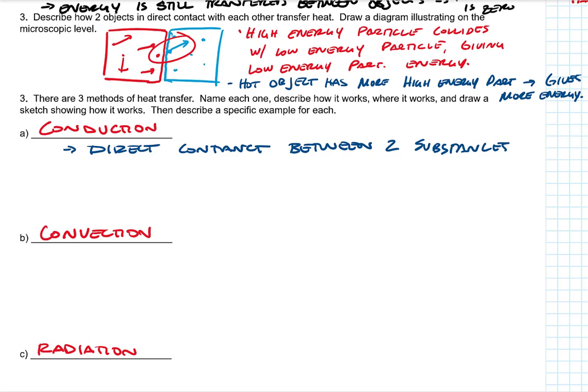Conduction is direct contact between two substances. Convection is different. This is a fluid. And so air or liquid heats itself. As hot air rises or hot liquid rises and cold falls.